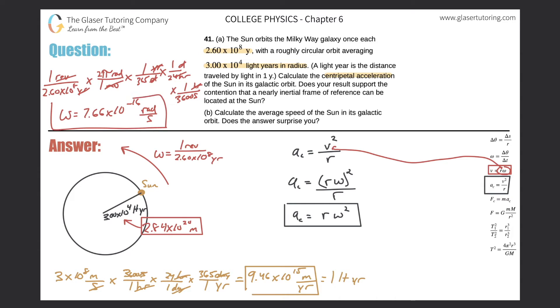So we have our omega now. And guess what, ladies and gentlemen, we can finally plug in. So here we have the centripetal acceleration is equal to 2.84 times 10 to the 20th, multiplied now by 7.66 times 10 to the negative 16. And that would be squared. The centripetal acceleration is 2.84 times 10 to the 20th, multiplied by 7.66 times 10 to the negative 16th squared.